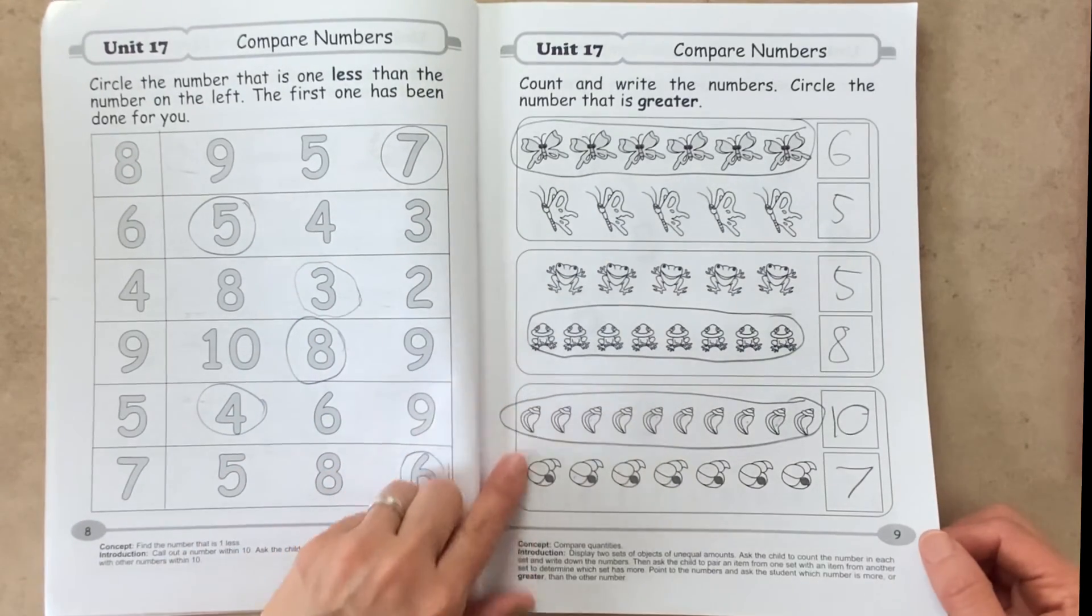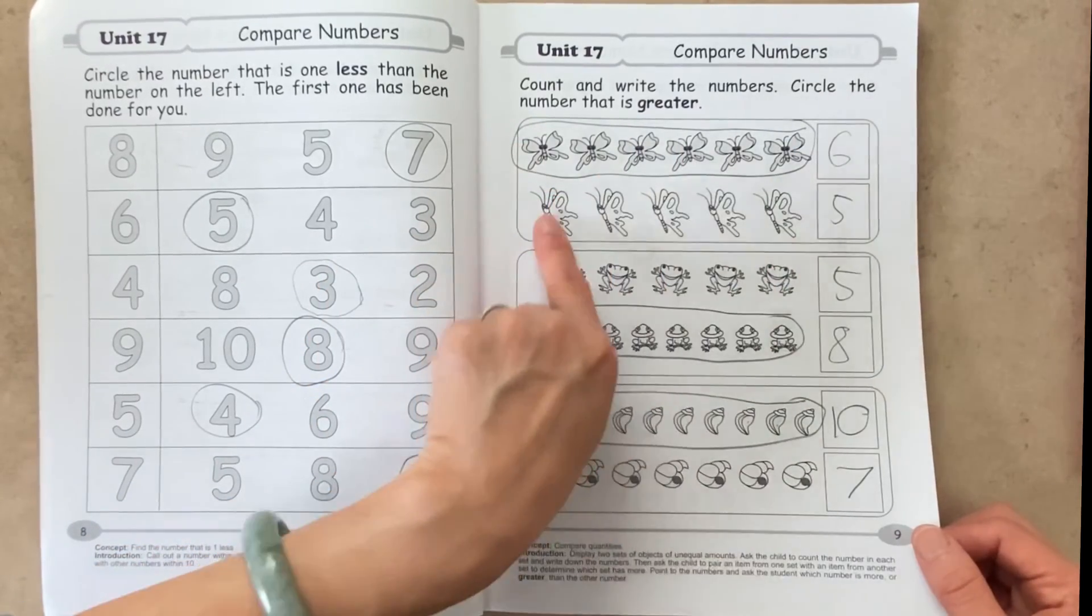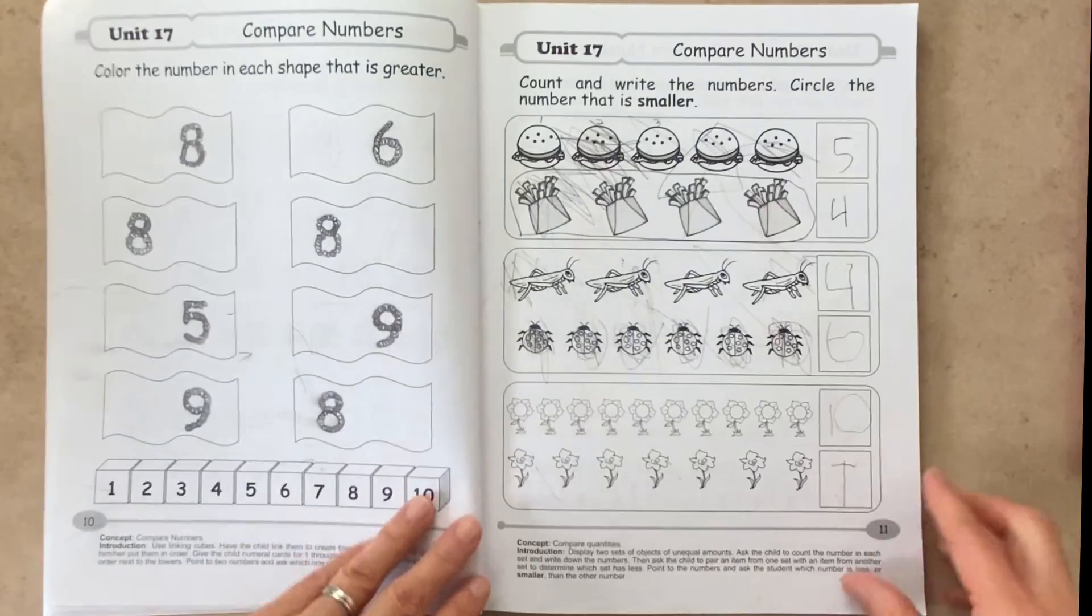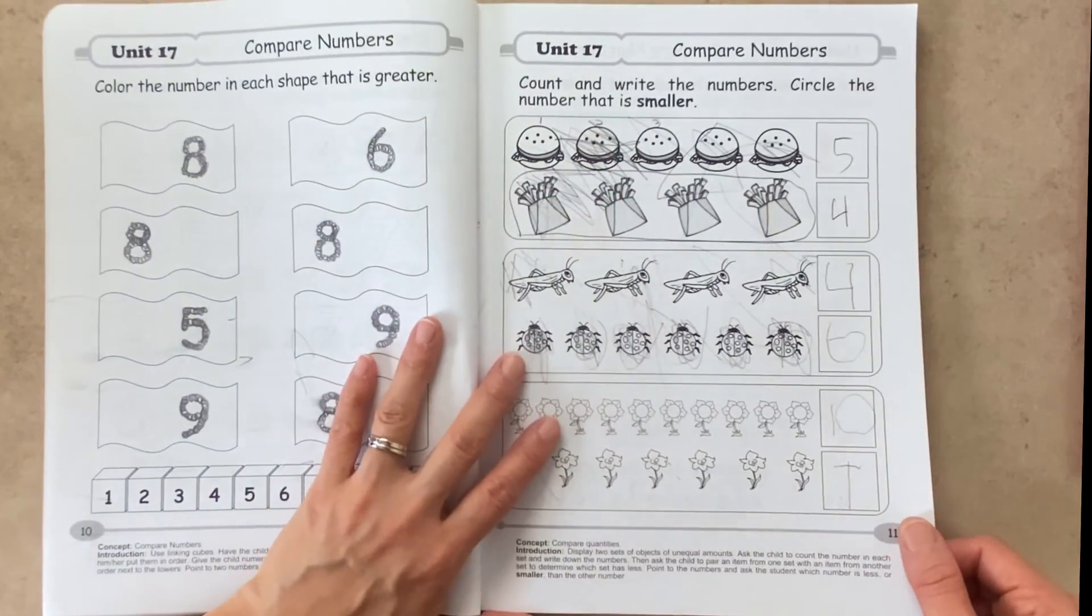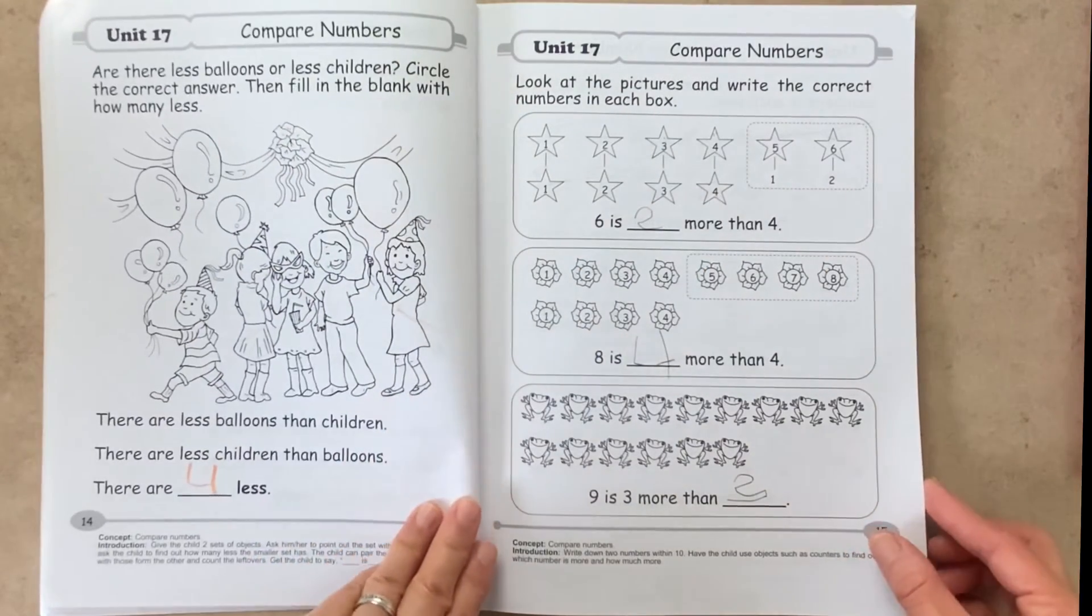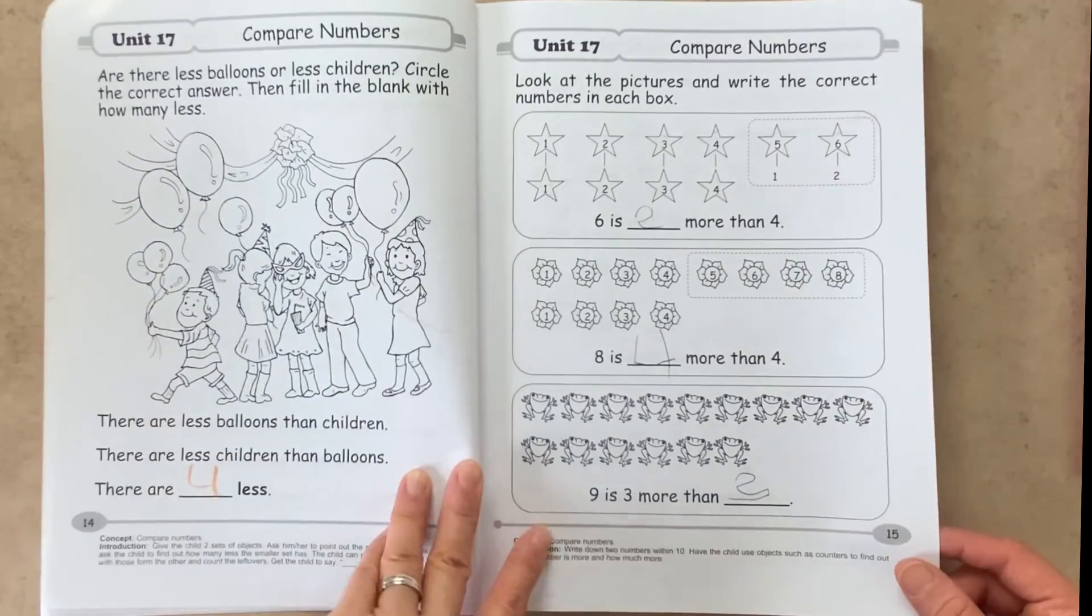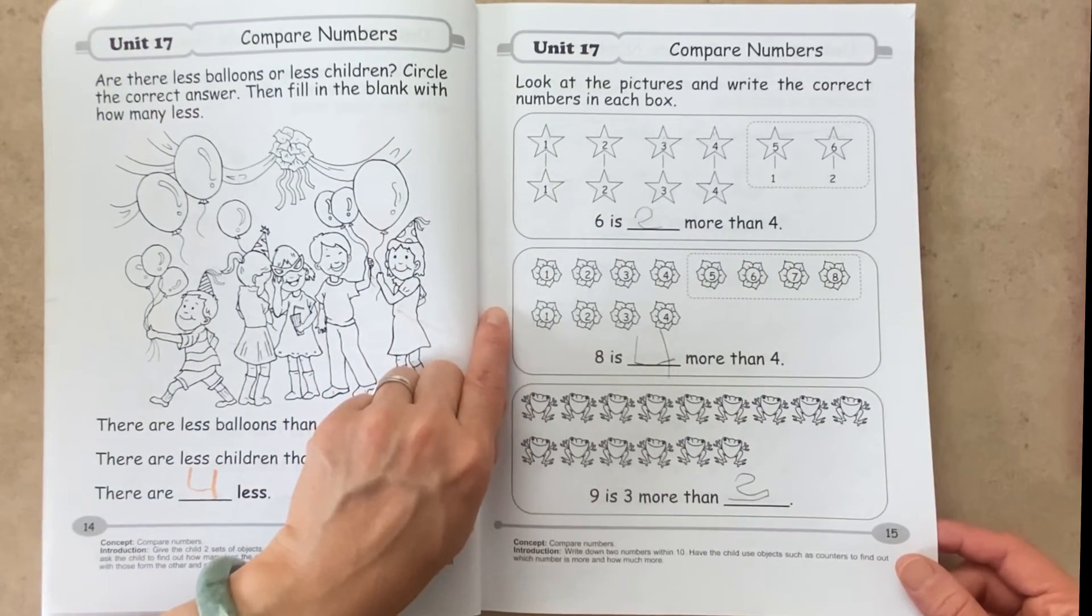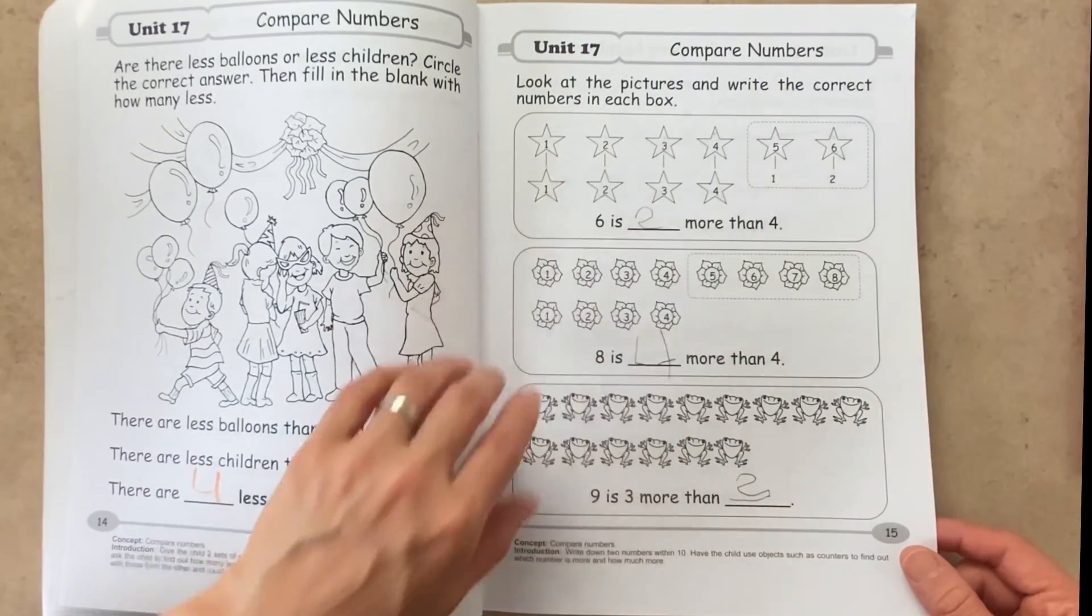And then page nine, we're comparing numbers, looking at them to see which one is greater. So which set of butterflies is greater? So six is greater than five. So same thing, same concept. And then next page, we're talking about which one is smaller or lesser, less than. On this page, we're addressing, are there less children or less balloons? And I like this page. You can totally visually see which one is more or less. So these stars are all lined up, and you can see which set has more or less.